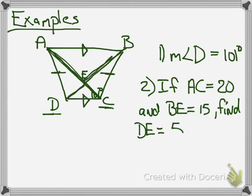think that the diagonals have to be congruent on an isosceles trapezoid. Then you could say 20 minus 15 is 5, and that way the whole thing here would be 20. So that's why DE would be 5. Okie dokie.